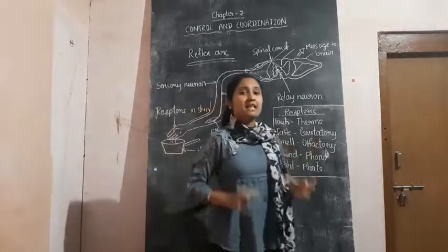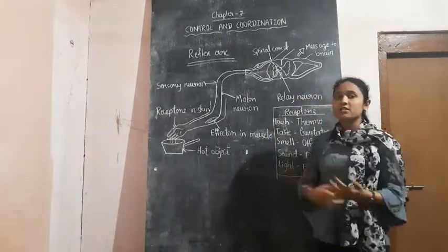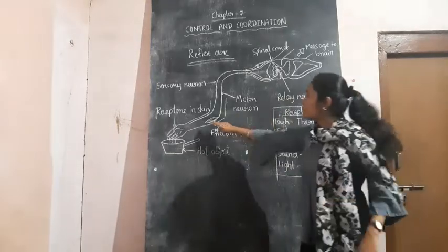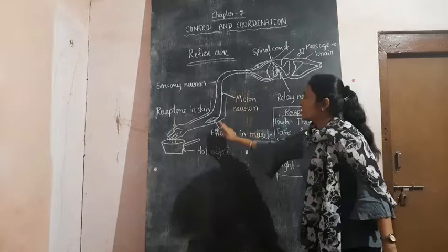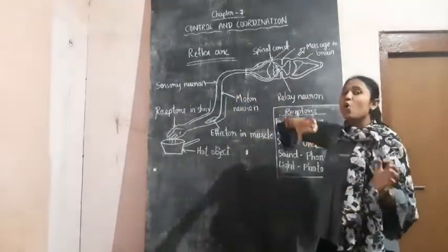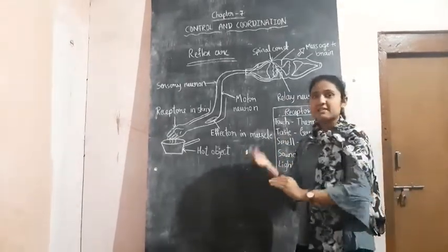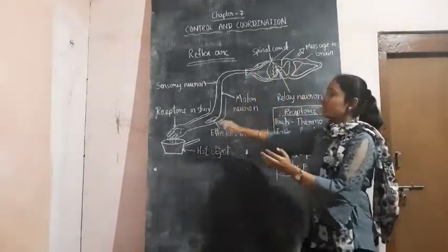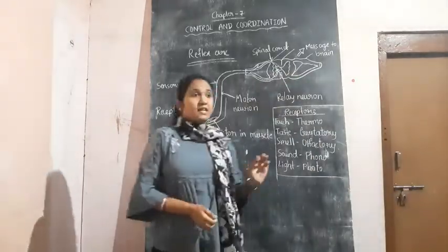Normally, the sudden actions or the quick actions are known as reflex actions. The whole pathway — from sensory neuron to relay neuron to motor neuron, between receptors and effectors — that is the whole pathway. And the entire pathway through which the reflex action takes place is known as the reflex arc. That is the whole pathway of the cycle created here — that is the reflex arc.